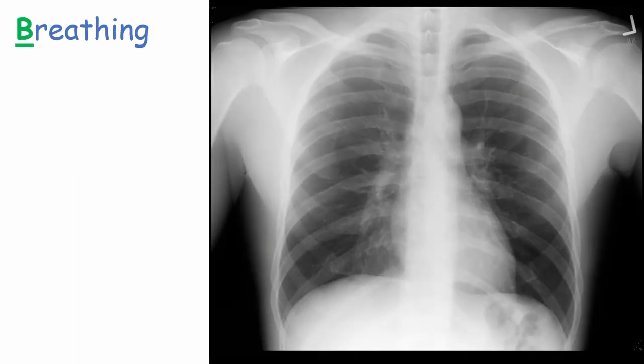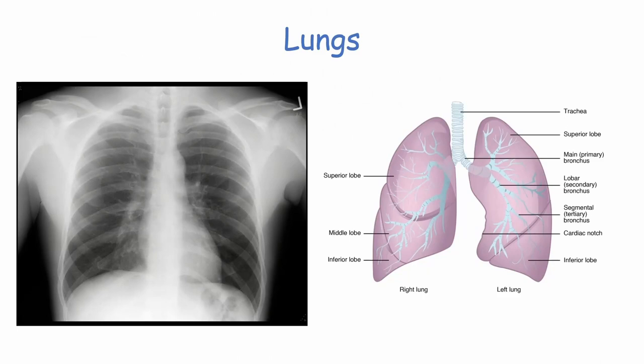B for Breathing refers to the lungs. The lungs on the chest X-ray should appear blacker than the surrounding tissue and should be mostly symmetrical in density. When describing areas of the lungs, we split them into upper, middle, and lower zones. These zones don't directly correlate with the anatomical lobes of the lungs, which are harder to identify on the chest X-ray.